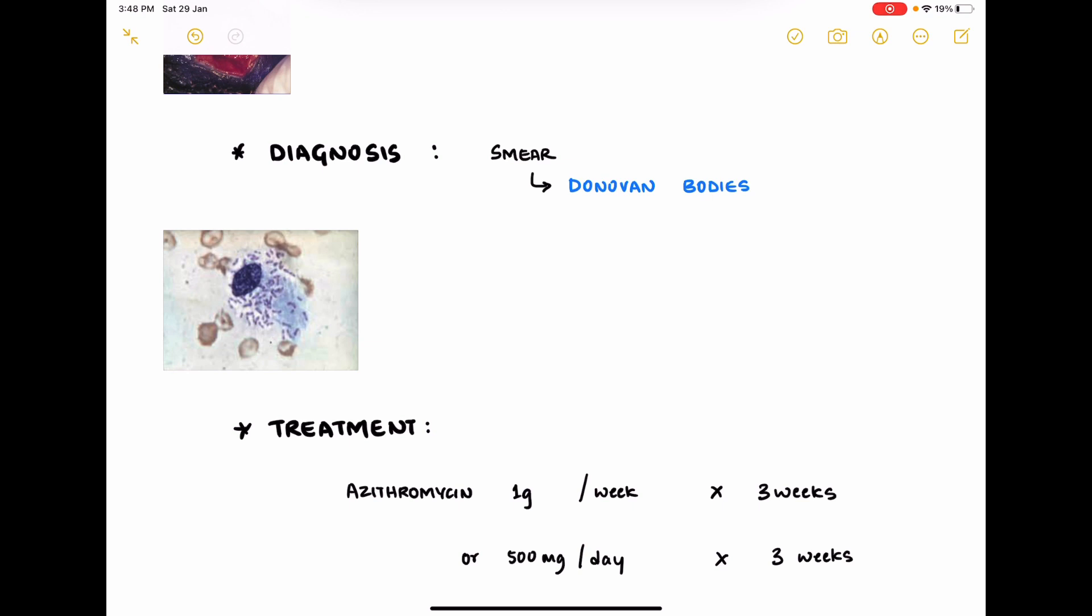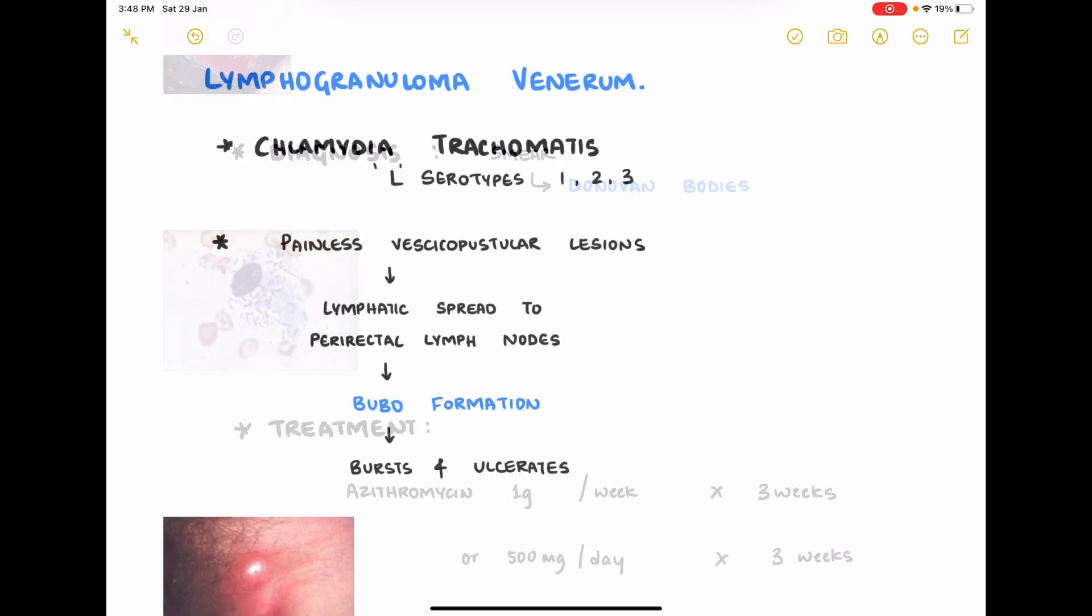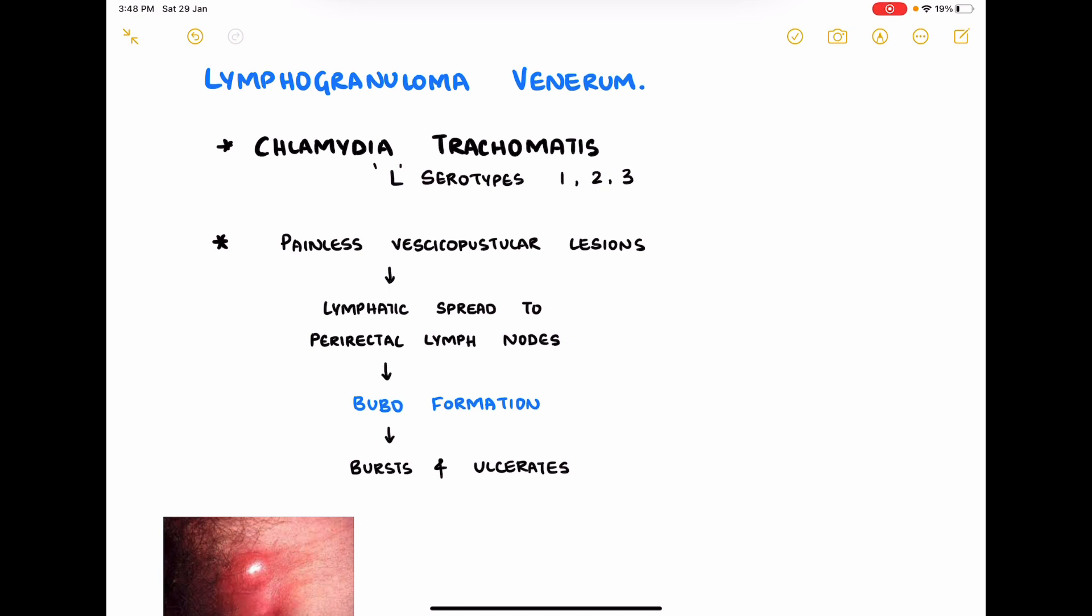The third condition is lymphogranuloma venerum, caused by Chlamydia trachomatis, mainly by serotypes L1, L2, and L3. It starts as painless vesicopustular lesions, and this spontaneously heals.